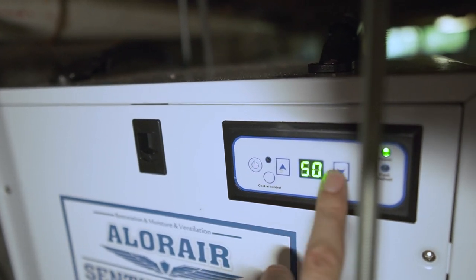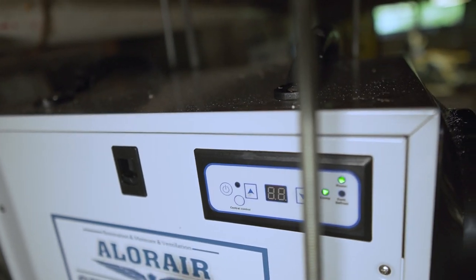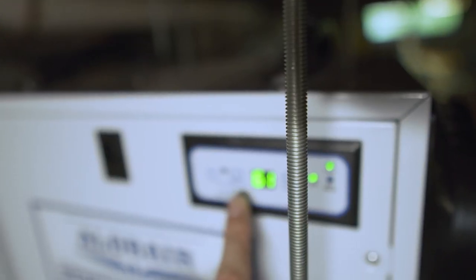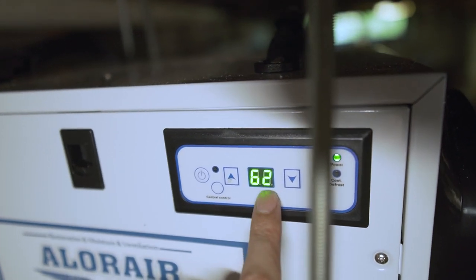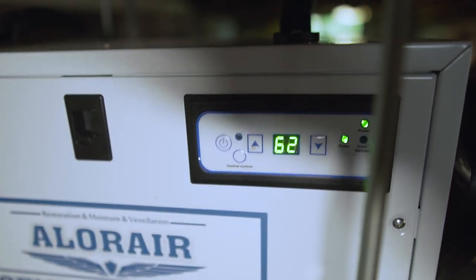And so you just press up or down to set the level that you want. And after a few seconds, it'll display the current humidity level. So we're at 62. I have it set to 50 right now.